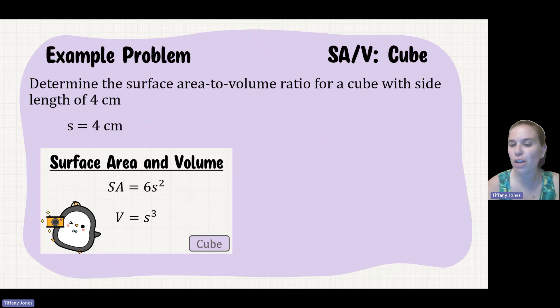Determine surface area to volume ratio for a cube with a side length of four, so s is equal to four. My surface area is 6s squared, s being four, so four squared is 16. So six times 16 is gonna give us 96.